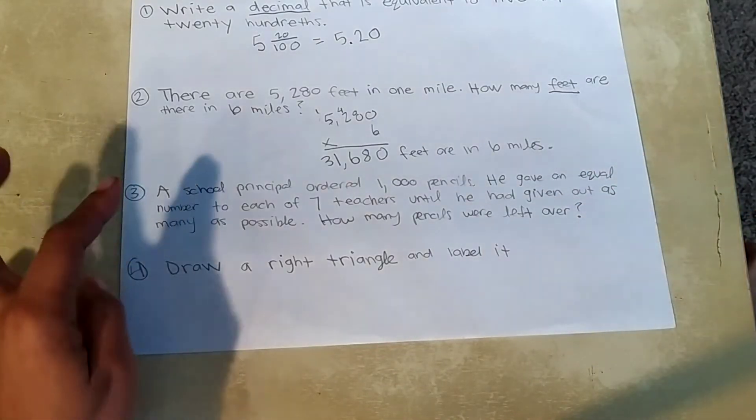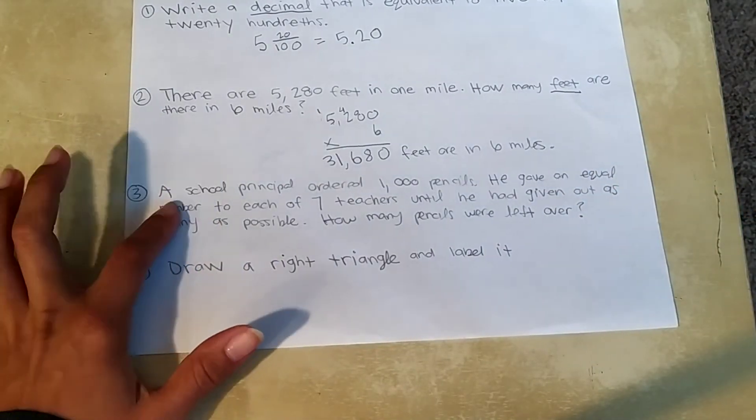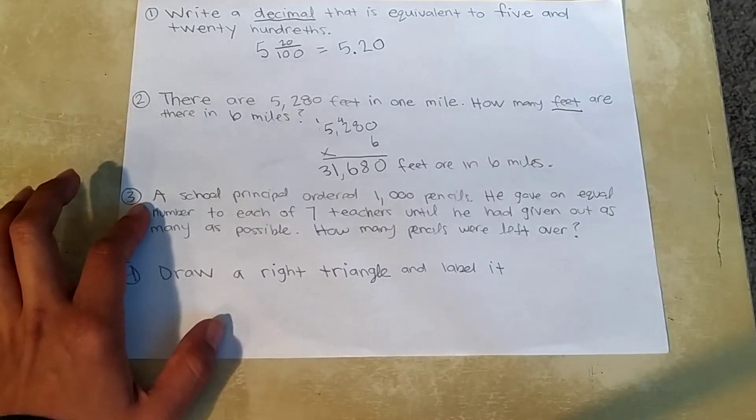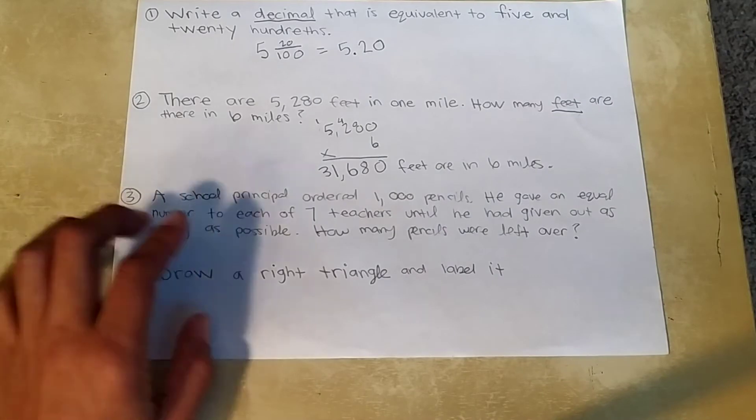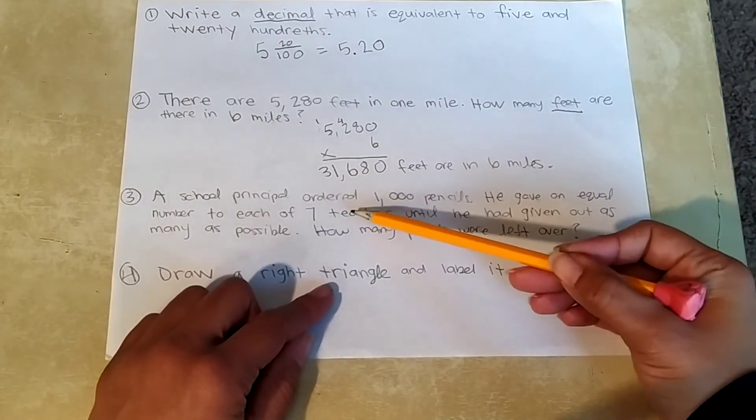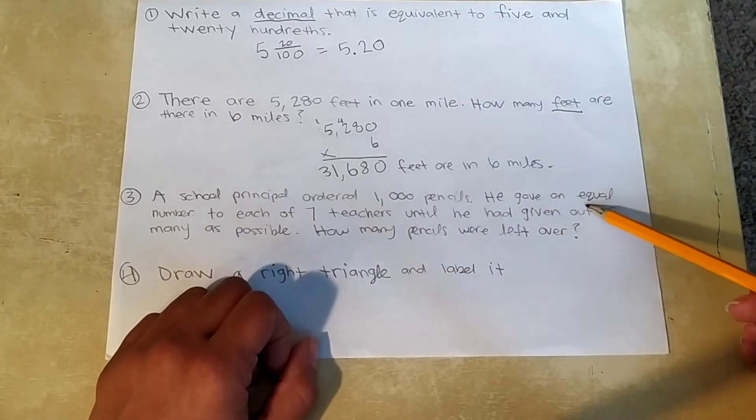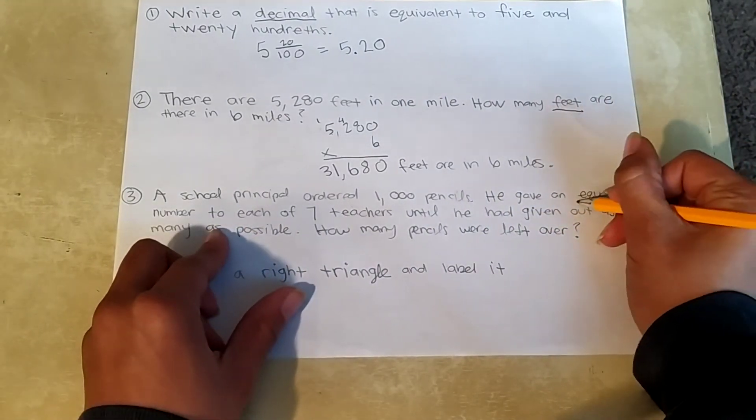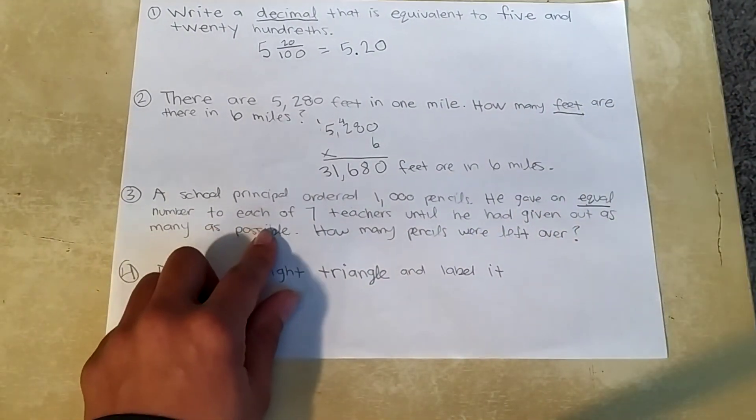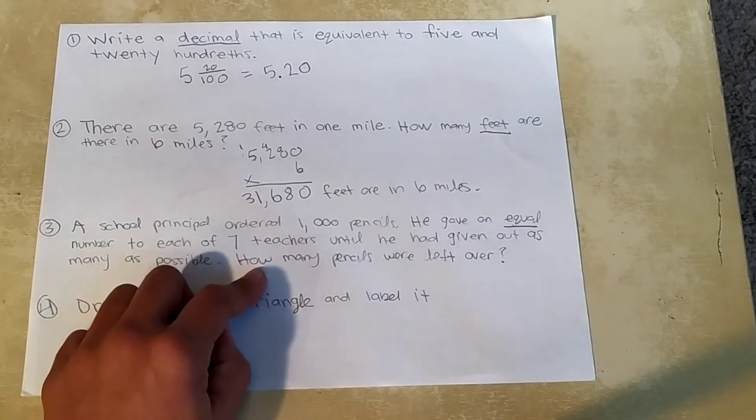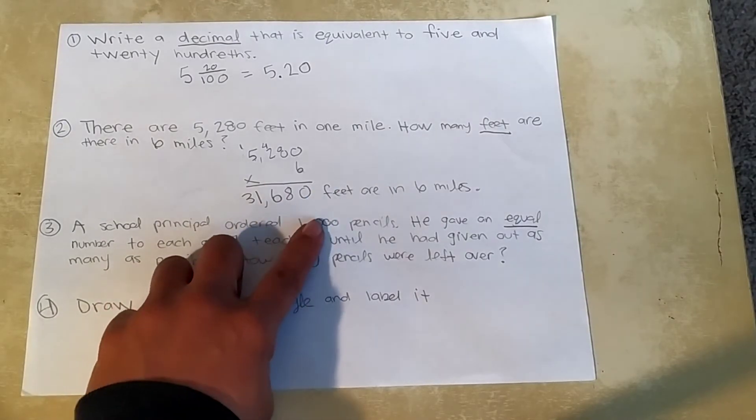Number three. Looks like I didn't give myself enough room to do the problem for number three. So I might have to flip to the back of the page. A school principal ordered 1,000 pencils. He gave an equal number. That's important.